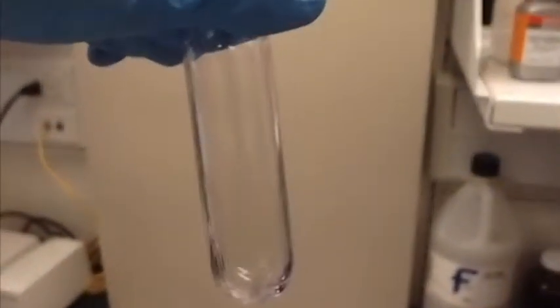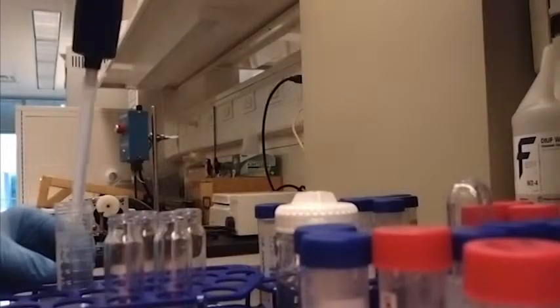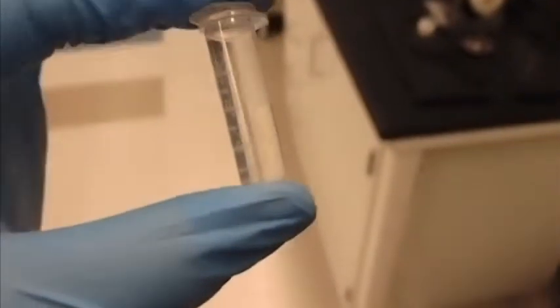The next day, it is centrifuged to separate the solid PIA from the ethanol. It is difficult to see on video, but there is some clear PIA on the inside surface of this tube. A small amount of water is added to the tube to re-dissolve the PIA. Here you can see some insoluble impurities, which will later be removed.